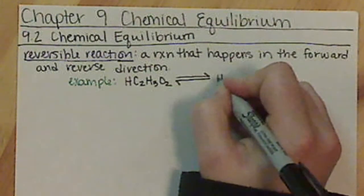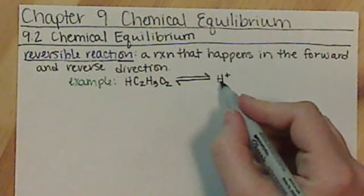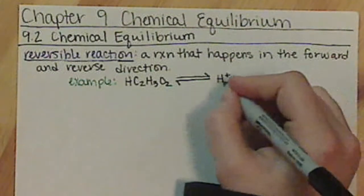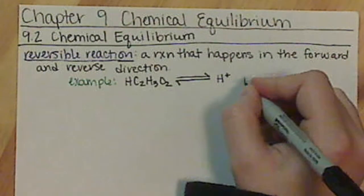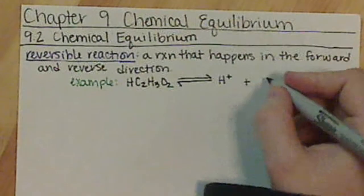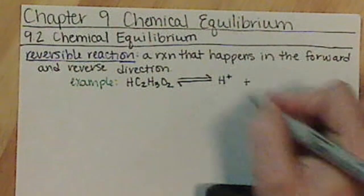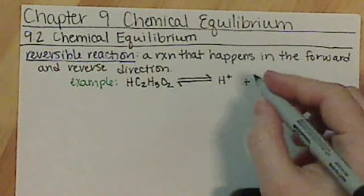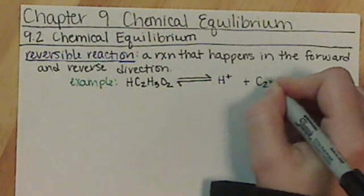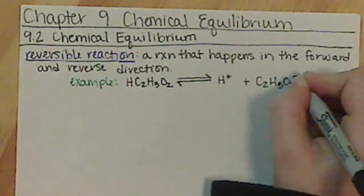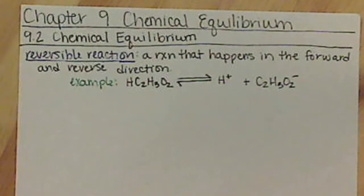Some of our reactants are going to split apart into the H⁺, that's a proton, hydrogen ion, same concept. We'll talk about this more specifically in chapter 10. And then we have the acetate ion.